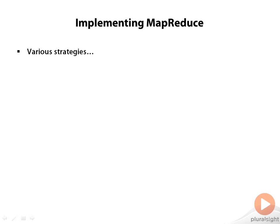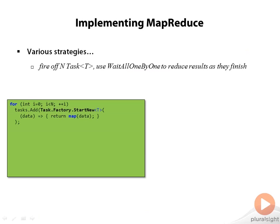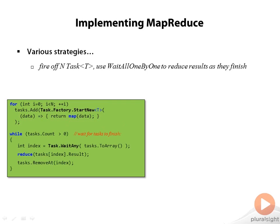There are various strategies for implementing MapReduce in the Task Parallel Library. The first is to fire off n mapping tasks that return data of type T, and then have the parent thread do a WaitAll one by one to reduce each of those results as the tasks finish. We actually used this approach with the consumer tasks in the Producer-Consumer Netflix demo. We have a loop that fires off the n tasks, each of which calls its map function and returns that result. The parent then waits for each task to finish one by one, and then calls the reduce function to process that result.